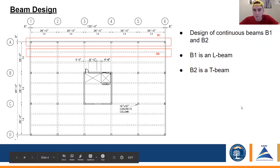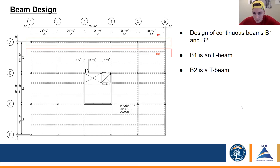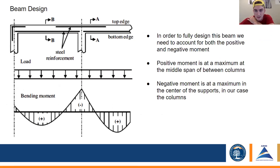For beam design we were instructed to design the continuous beams B1 and B2. B1 is an L-shaped beam and B2 is a T-shaped beam. Continuous beams have more than two supports along their span. As you can see on the graph, continuous beams have both a negative and a positive moment — the negative moment peaks right over the supports, and the positive moment peaks in the middle of the span. To fully design a continuous beam you have to account for both.